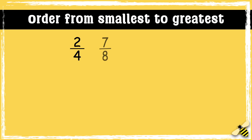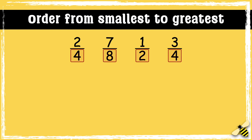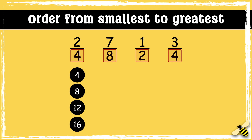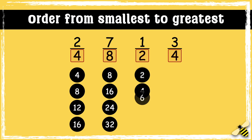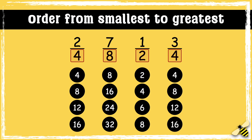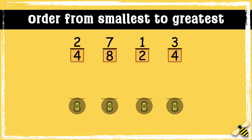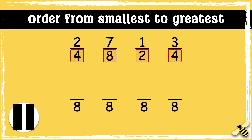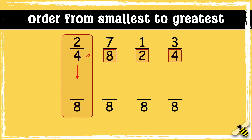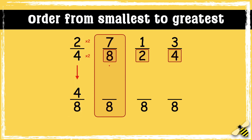We're going to put these fractions in order from smallest to largest. To do this we need to find a common denominator, which will be a multiple of all of these denominators. Let's have a look at some of the multiples of these denominators. We can see that 8 is the lowest common multiple. Pause the video to give yourself time to work out the answer. We need to multiply 4 by 2 to get 8, so we also need to multiply the numerator by 2. 2 times 2 is 4.